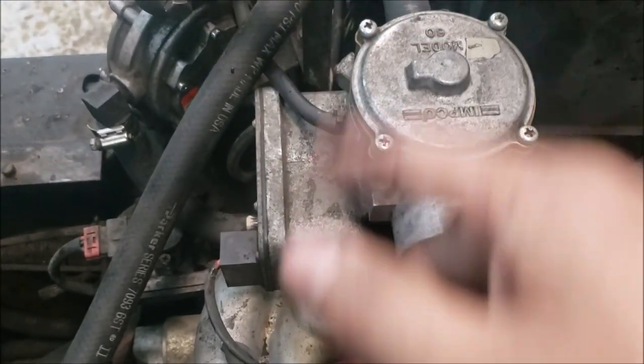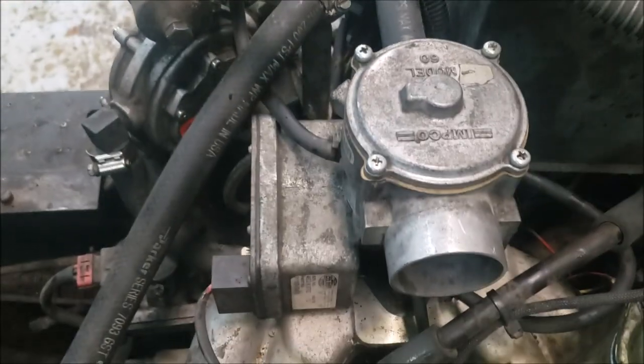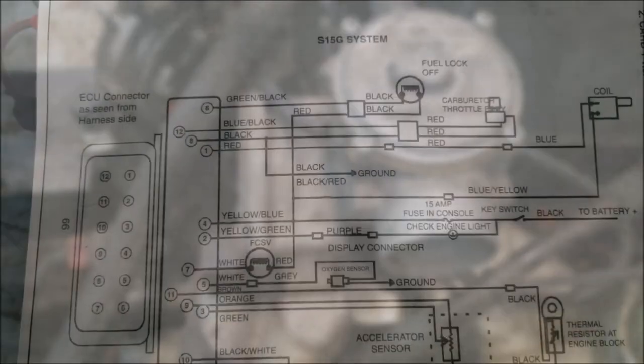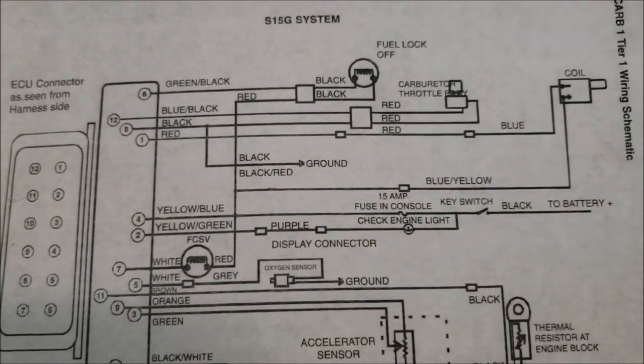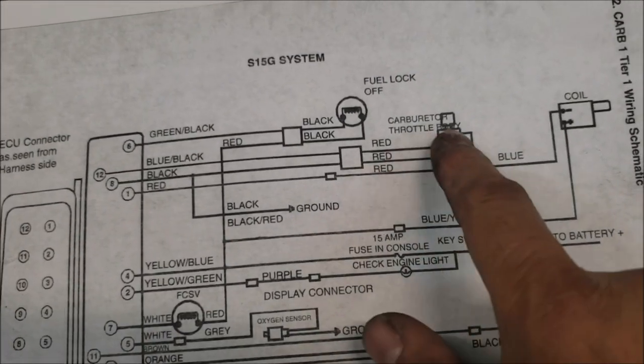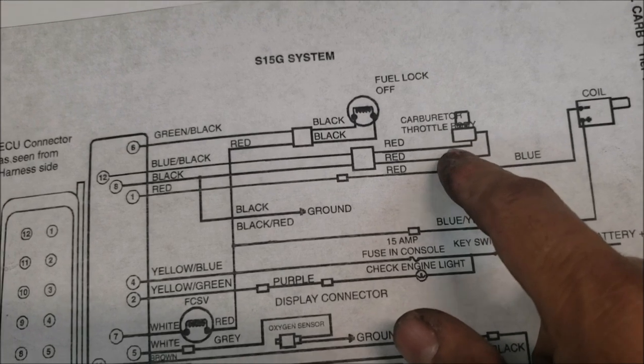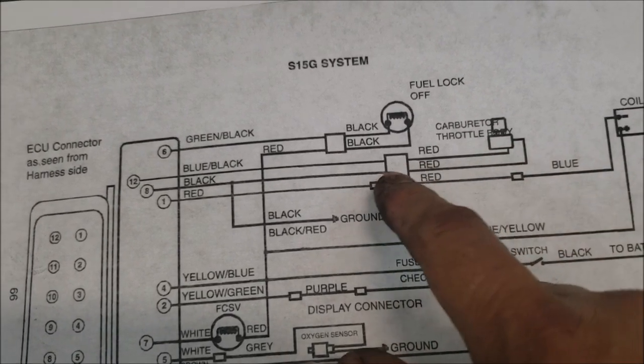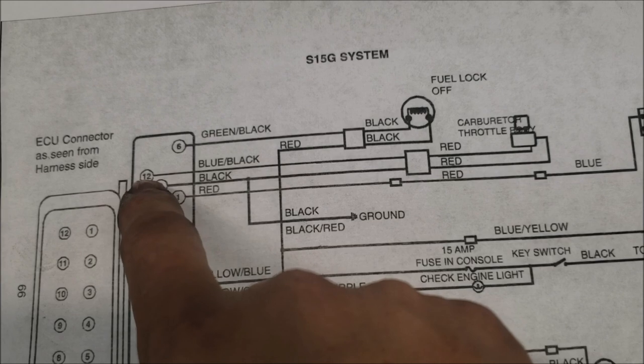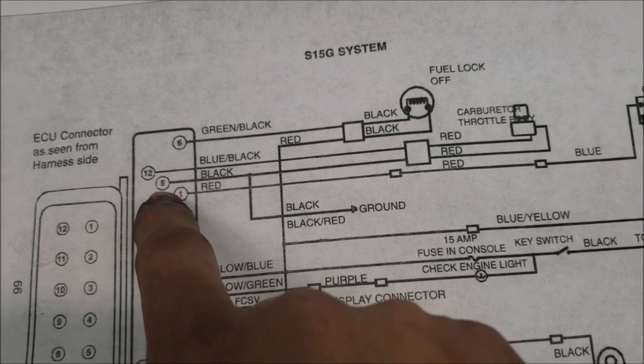And we're going to use oscilloscope to look at the signal coming from the computer, if it's actually trying to open. So this is the diagram for this computer that runs this engine. Here is the electronic throttle, and right now I'm hooked up to pin number 12 and pin number 8.